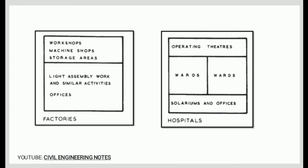For factories, we should also consider the workshops, machine shops, storage areas, light assembly work, and similar activities. For hospitals, we have operating theaters, wards, solariums, and offices.